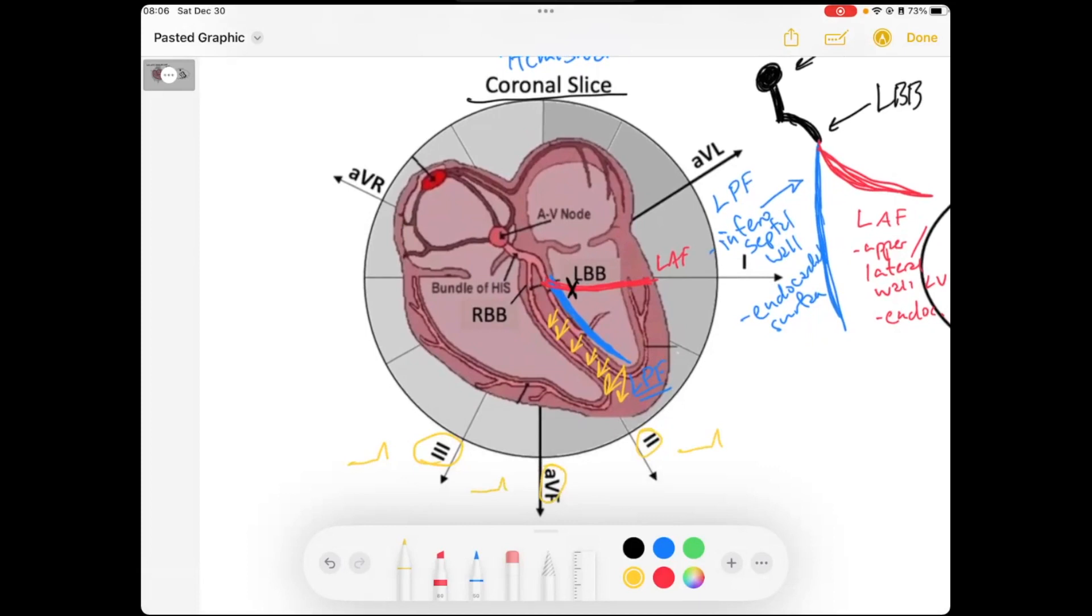Similarly, we look at our lateral leads, lead 1 and lead AVL. This will produce small Q waves in those leads. So lead 1, this will produce small Q waves, right, because that signal is going away from the lateral leads. And the left posterior fascicle depolarizes its territory. And that's going to occur first. So the first thing we're going to see is that deflection.